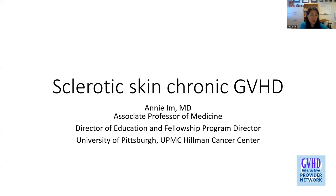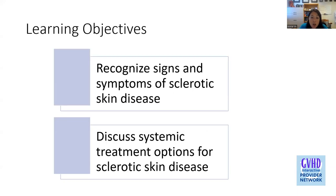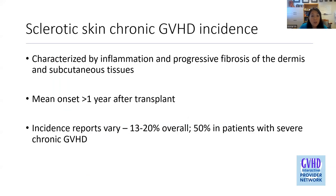In terms of incidence, sclerotic skin chronic GVHD is characterized by inflammation and progressive fibrosis of the dermis and subcutaneous tissues. The mean onset is about one year after transplant, and incidence reports vary but have been reported between 13 to 20% overall, and can be as high as 50% in patients who already have severe chronic GVHD.